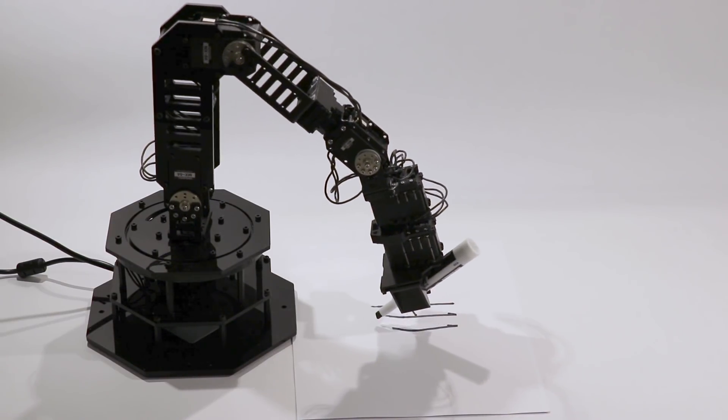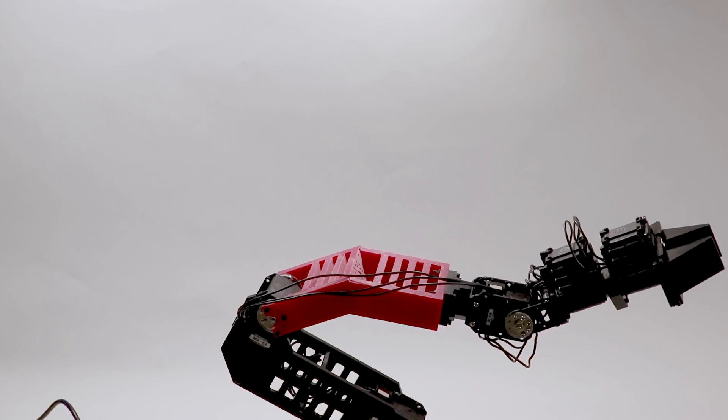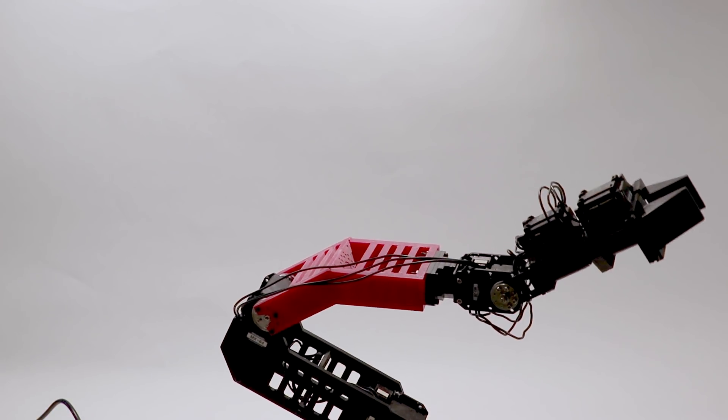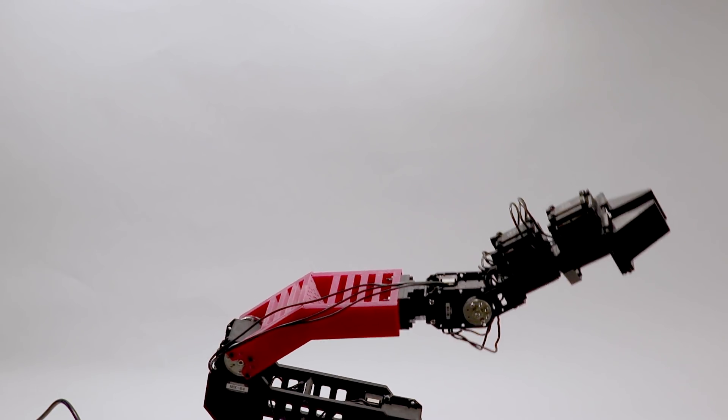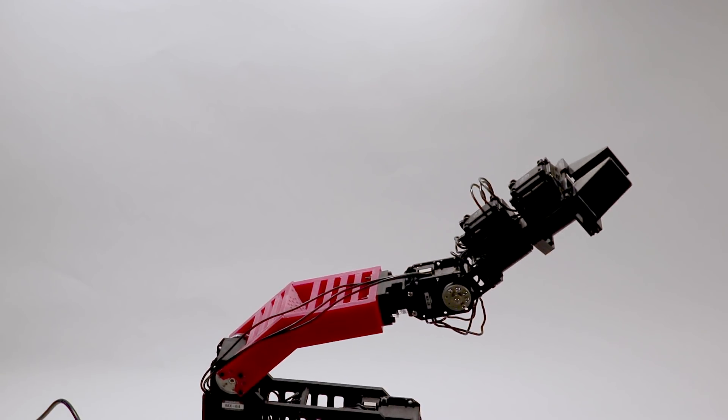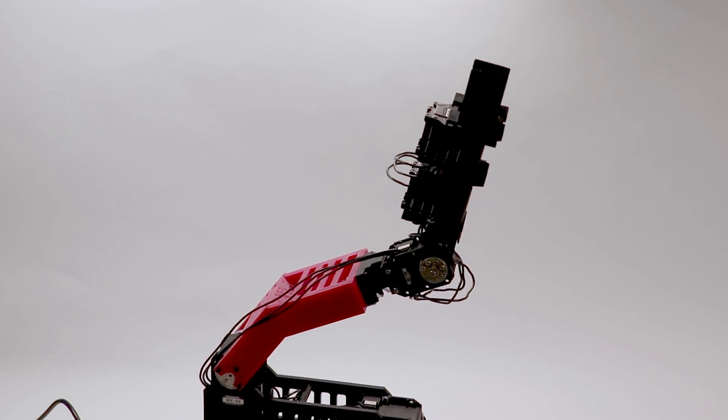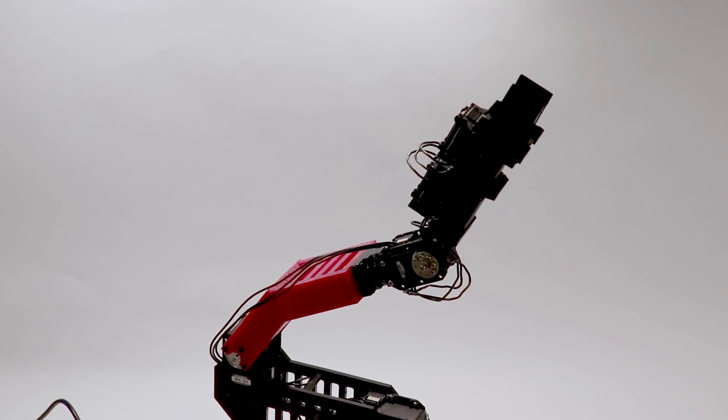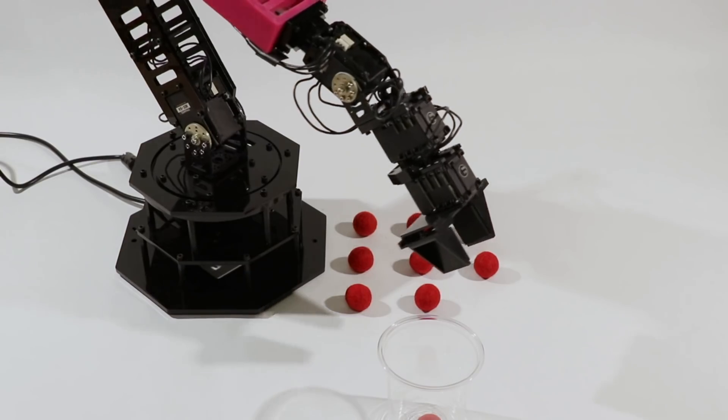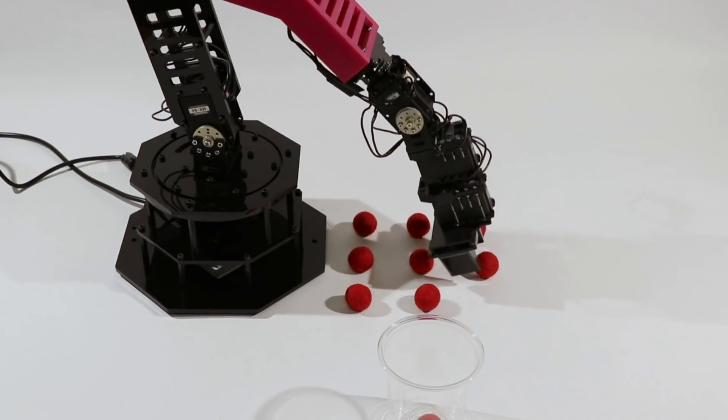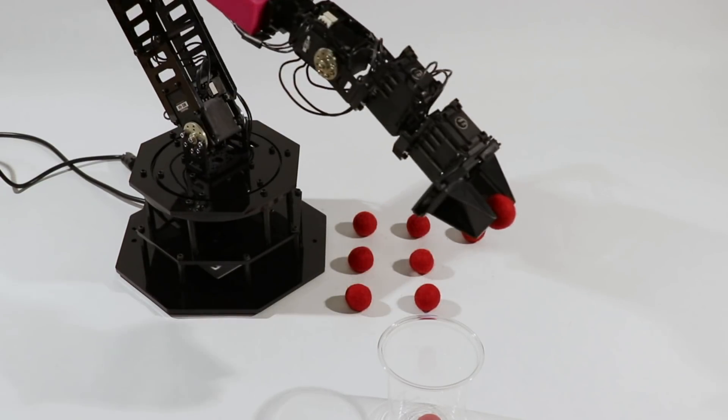A self-model is also useful for allowing the robot to detect changes to its own morphology due to damage, wear, or adaptation. For example, here we replaced one of the robot arms with a longer, slightly deformed part. The robot automatically detected the change and reimagined its self-model. The deformed robot could then resume its task with little degradation in performance.